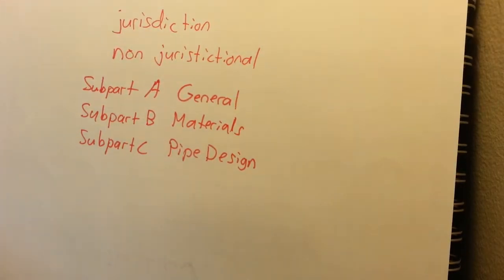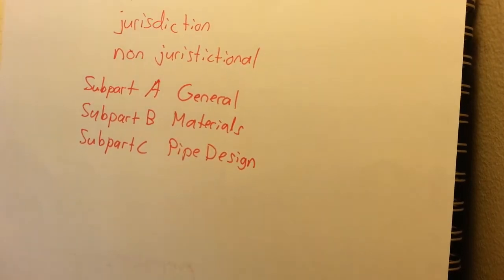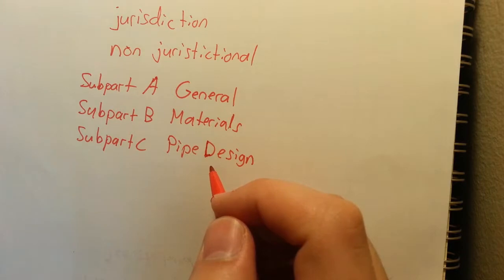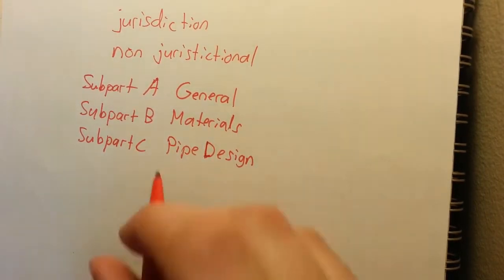F, E, and T: longitudinal joint factor, temperature derating factor. It goes through all that and how to get those safety factors. It also has plastic pipe.